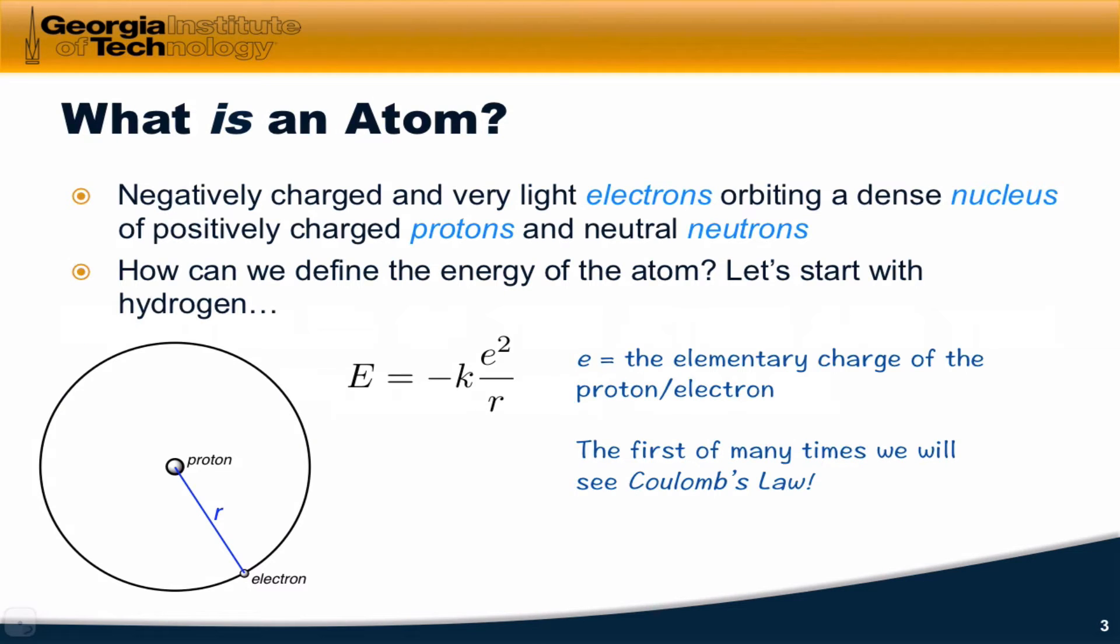So what is an atom really? We have negatively charged electrons orbiting a dense nucleus of positive protons and neutral neutrons. For example, in the hydrogen atom, the electron has a negative charge and the proton has a positive charge.